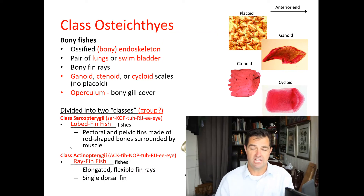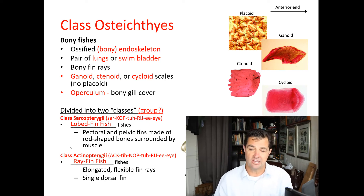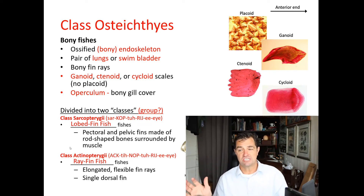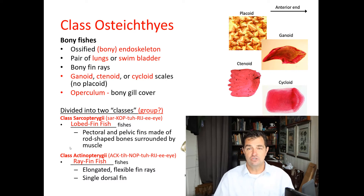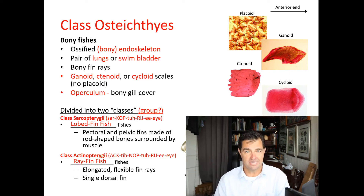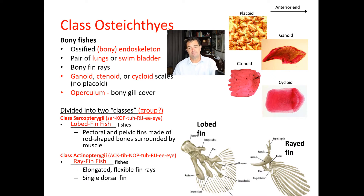Within class Osteichthyes there are two groups: class Sarcopterygii, which are the lobe-finned fish, and class Actinopterygii, the ray-finned fish. You'll notice I have one class with two classes below it — that's because taxonomists have recently eliminated class Osteichthyes and elevated the other two groups to class status.